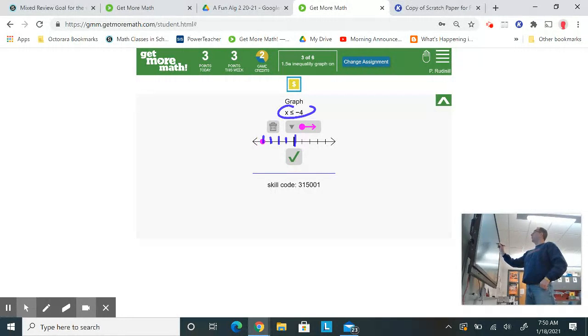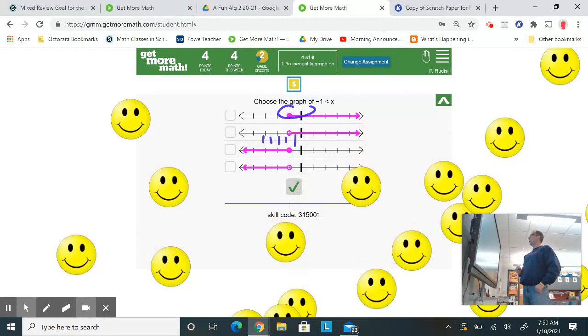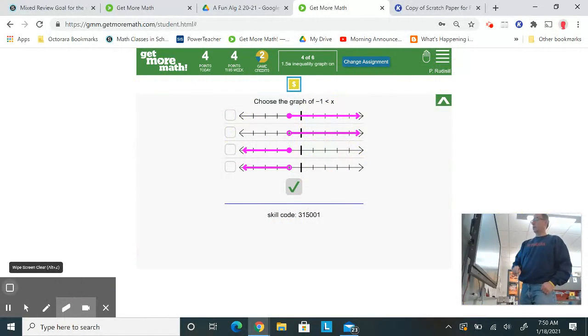I have the equal at negative 4. So I just tap to the left all the numbers that are less than negative 4. See how we did. Do a couple more yet.